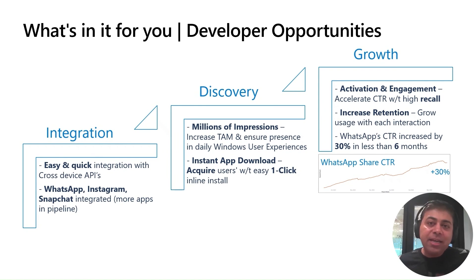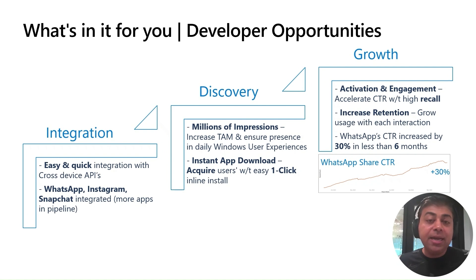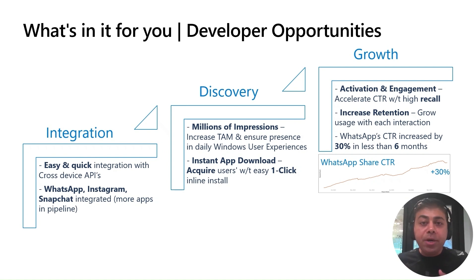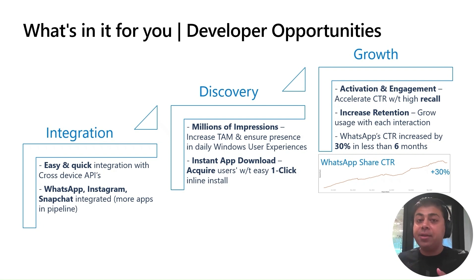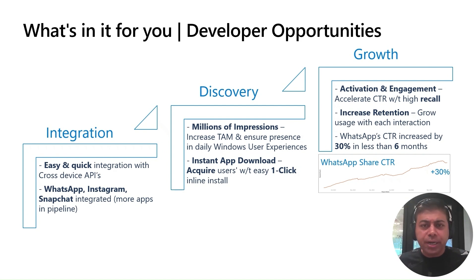But before getting into the details, let's talk about what's in it for you. For our app developers, this is going to be a game-changer. With cross-device Share, Resume, and People API, app developers can deeply integrate their apps into the Windows experiences, and we have made integration with cross-device APIs easy and seamless. These new integrations open doors to millions, even billions of users, with telemetry data indicating a significant uptick in app installs and engagement post-integration. Just by leveraging the Share Contract API, we saw tremendous growth in WhatsApp's share sessions, increasing more than 30% in less than six months. The increased discovery and increased app installs presents you with a massive opportunity to acquire new users, increase engagement, and retention across platforms.